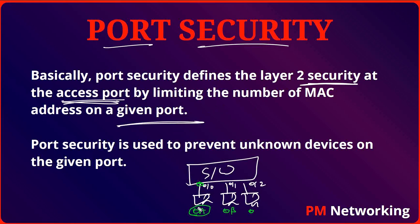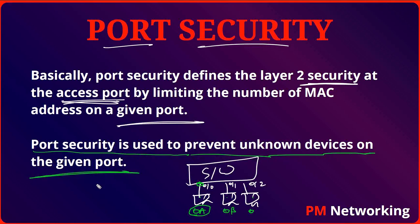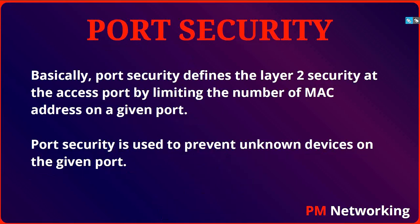You can also bundle multiple MAC addresses on a single access port. For example, these three computers can connect on this interface, but if any other computer apart from these three tries to connect, the interface will go down. Port security is used to prevent unknown devices on the port. If a device's MAC address is unknown and the switch doesn't know about it, whenever that computer connects on this interface, the interface will automatically go down.